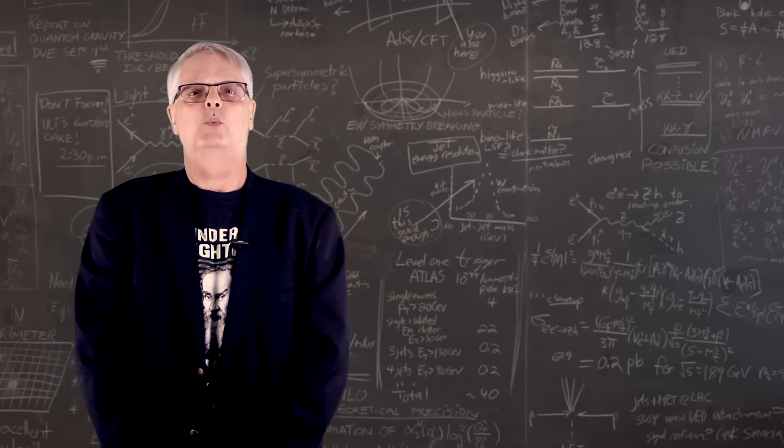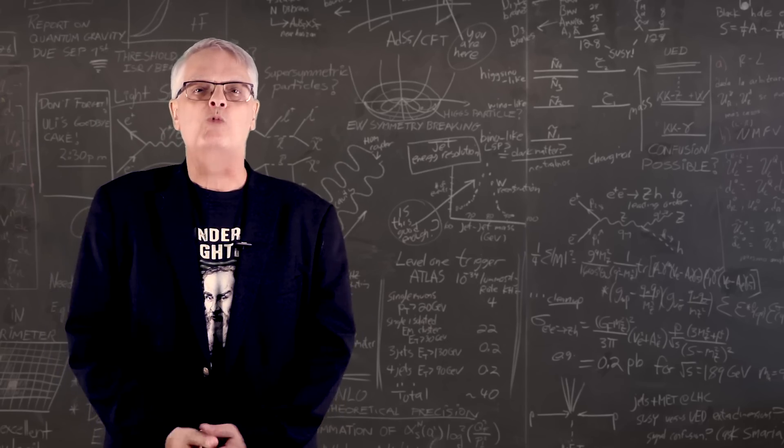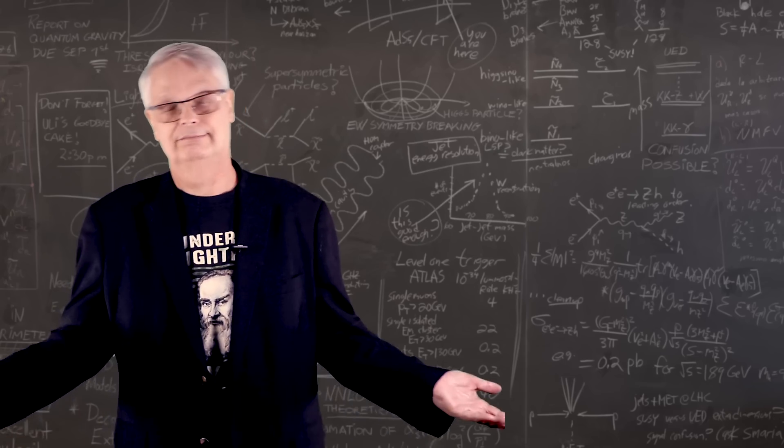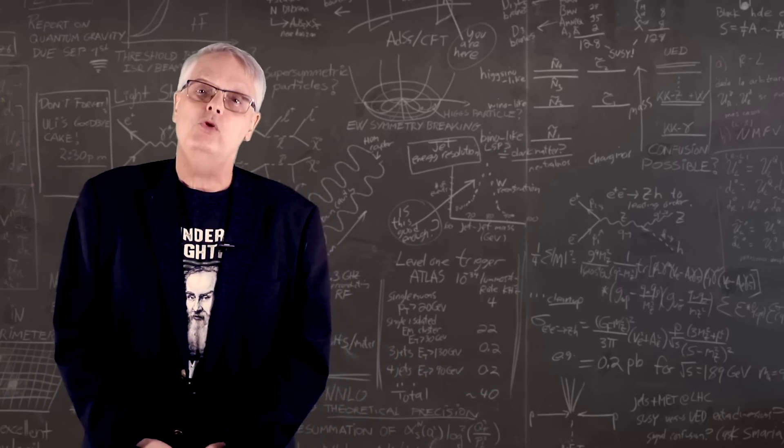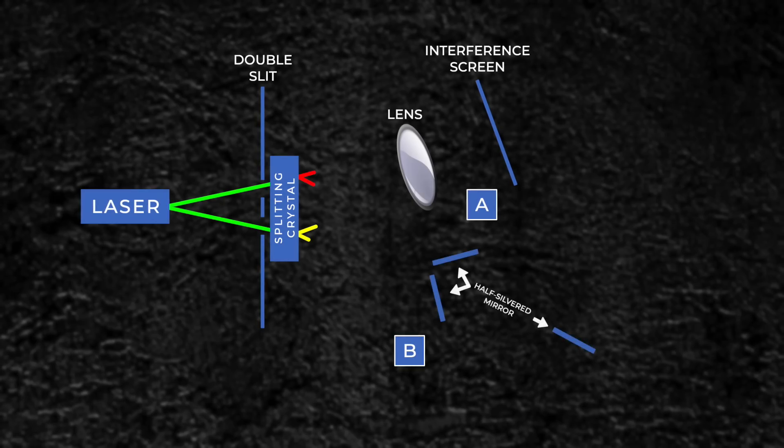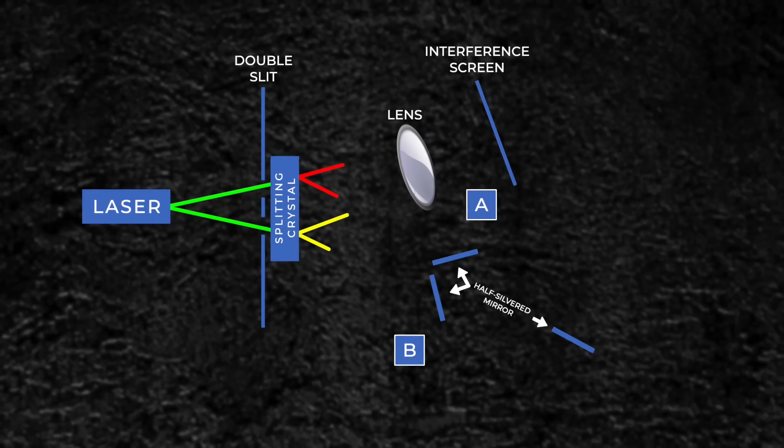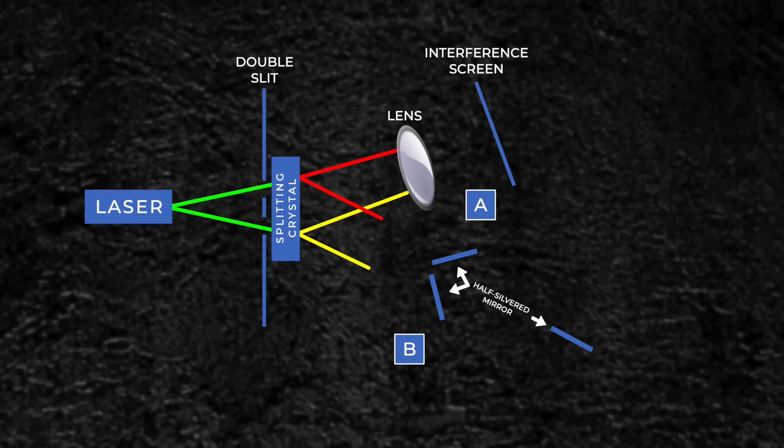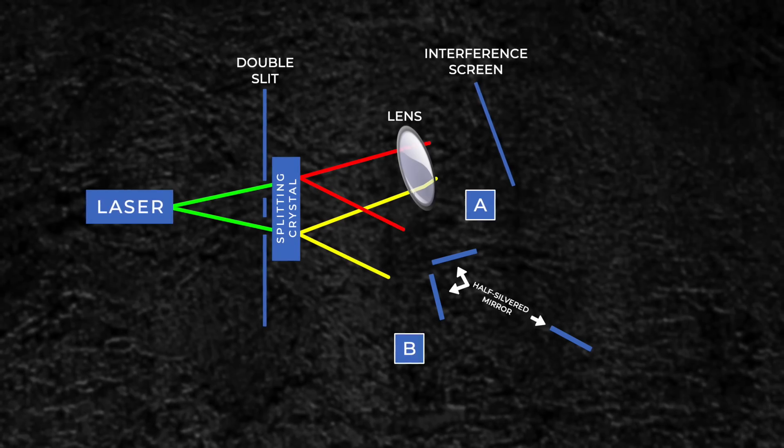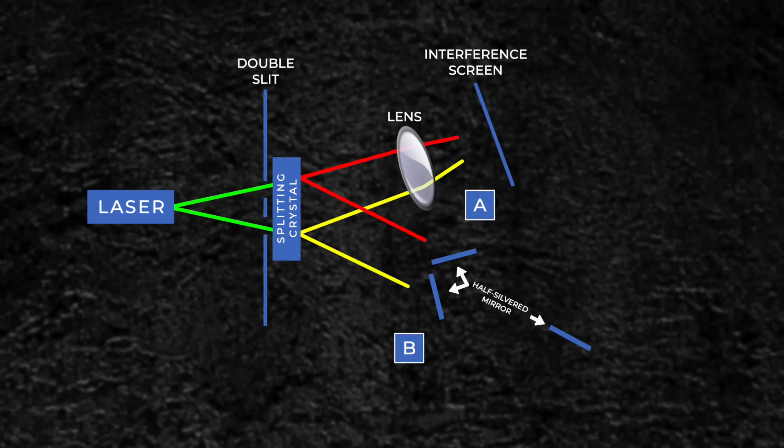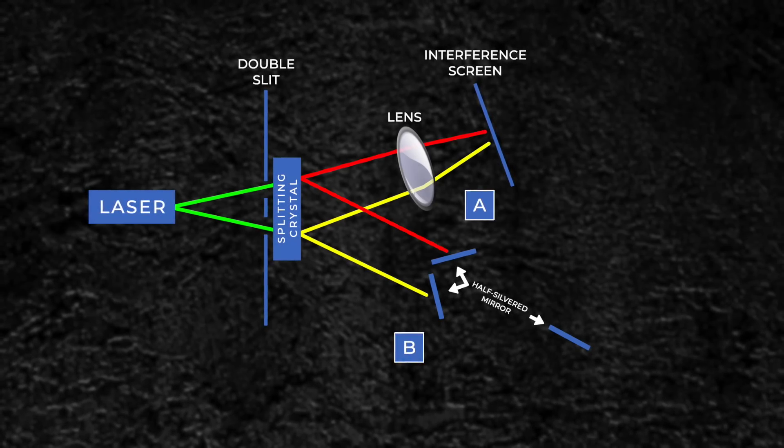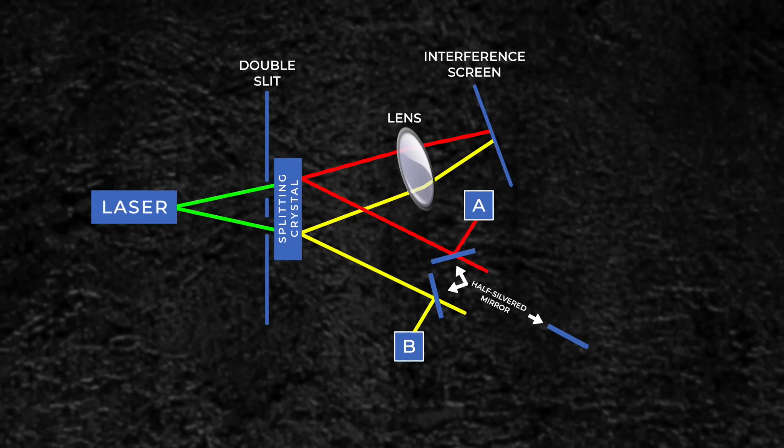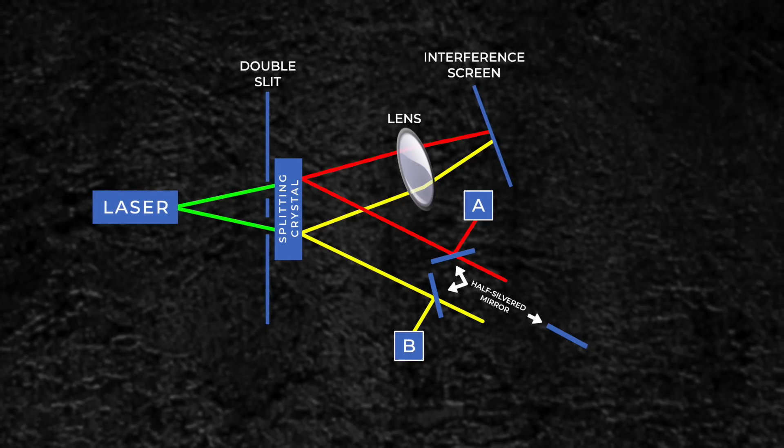But there's yet another step in weirdness. What if you can erase your knowledge of which slit the photon goes through? What happens then and how do you do it? You do it by adding three half-silvered mirrors. A half-silvered mirror will reflect half of the photons and half will pass through. You put two of them, one in front of detector A and one in front of detector B. This means that the beams of cousin photons can go into the detectors or get passed along to additional instrumentation.